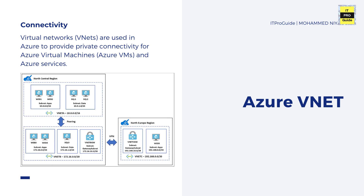We all know about virtual network as it relates to Hyper-V and VMware. It is a fundamental building block of your private network in your on-premises data center. You create port groups, virtual networks, and subnets for further isolation, and you have routers and firewalls for further network connections. Similarly, Azure Virtual Network is the building block of your private network in Microsoft Azure Cloud. VNet is a virtual network in Microsoft Azure.